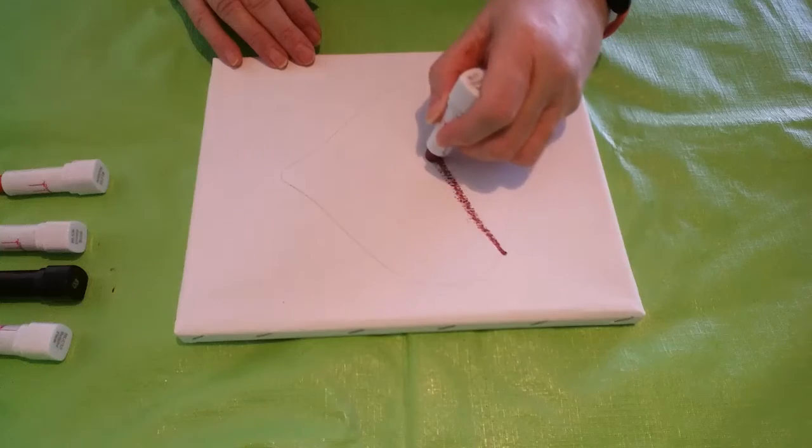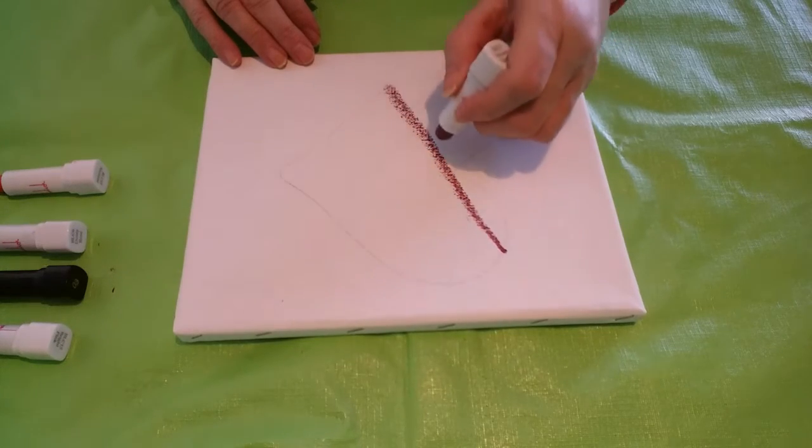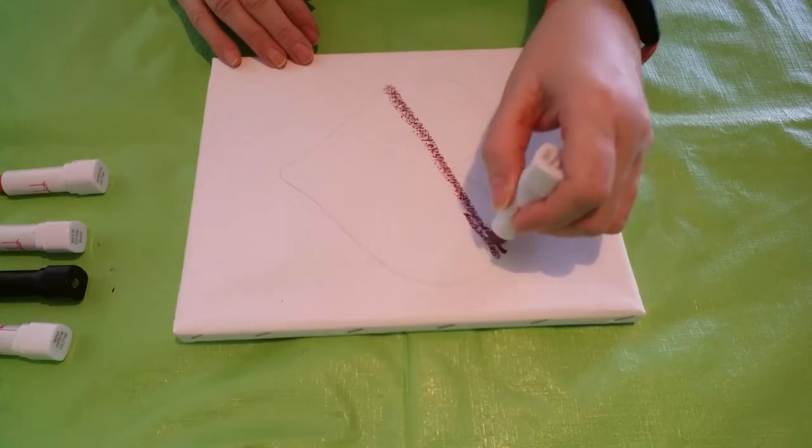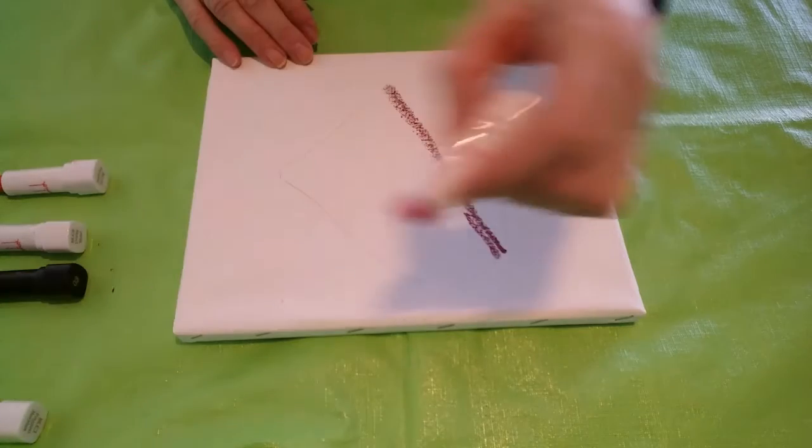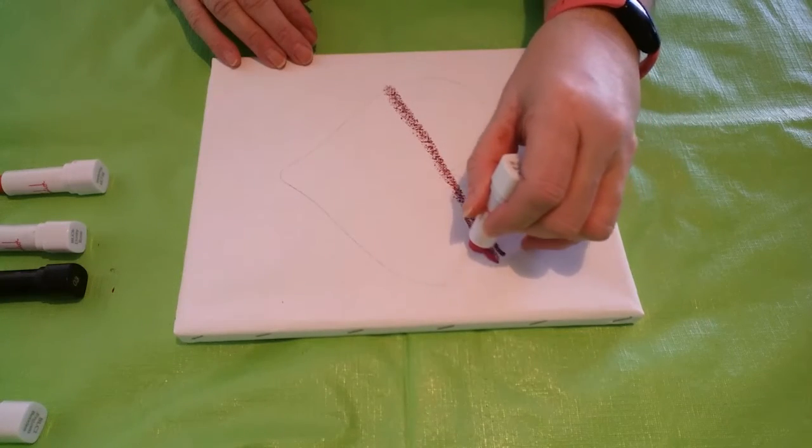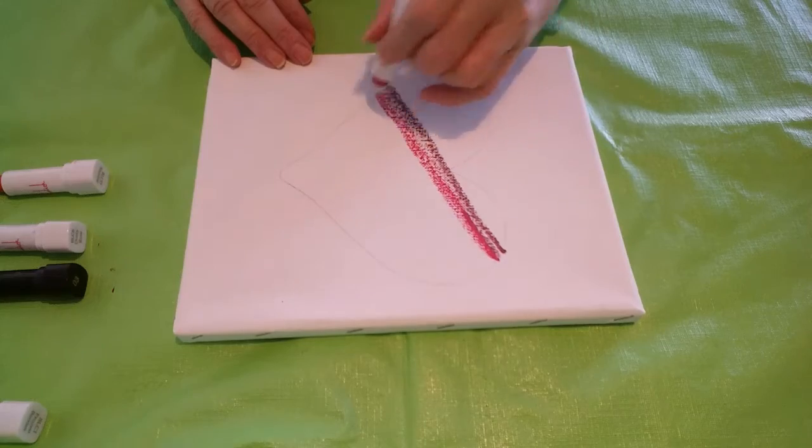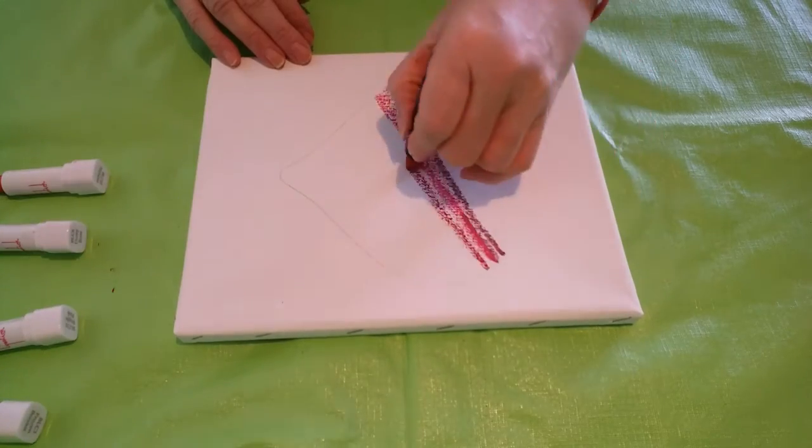I started drawing where the heart comes to a V. Then on about a 45 degree diagonal, draw your first lipstick line. Keep alternating colors until your picture is complete.